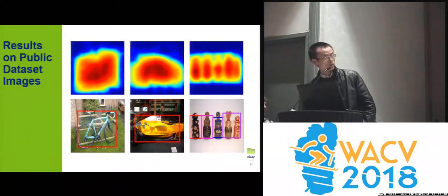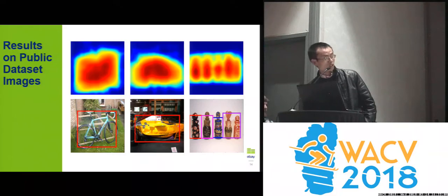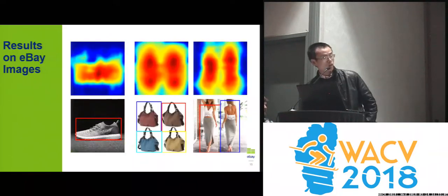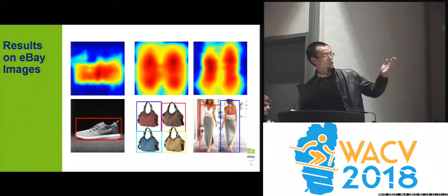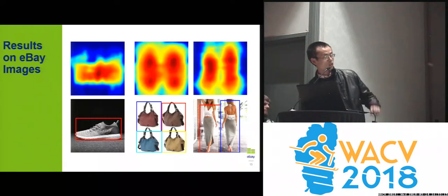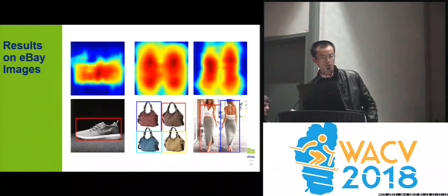Here we show some results on public datasets. Here are results on some eBay seller images. As you can see in the second column, there are four tightly enclosed Gaussian distributions, but we can still accurately generate the four bounding boxes.